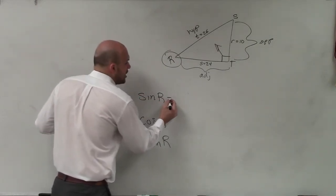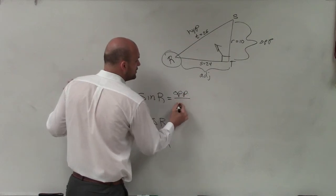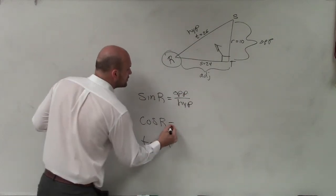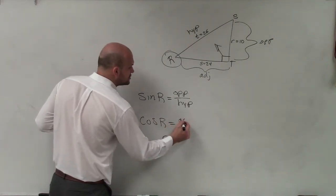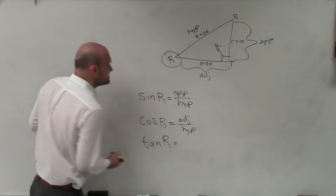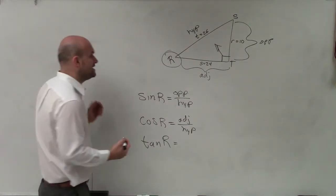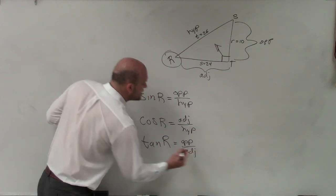The sine of r is equal to the ratio of your opposite side over your hypotenuse. The cosine of your angle r is equal to the ratio of your adjacent side over your hypotenuse. And the tangent of your angle r is equal to the ratio of your opposite side over your adjacent side.